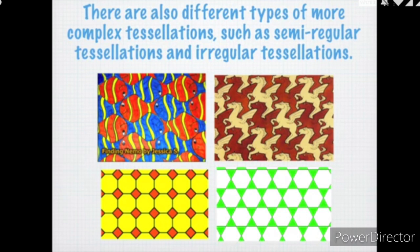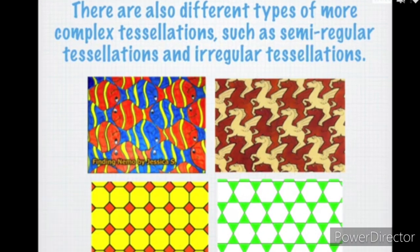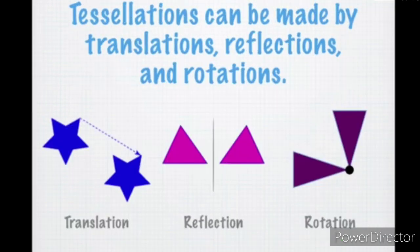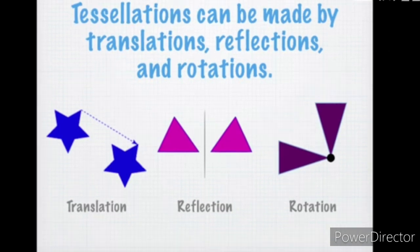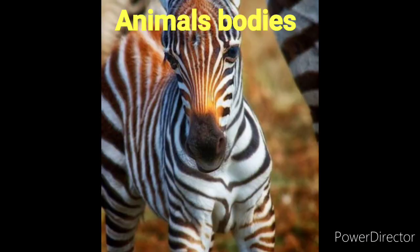Tessellations are in regular and irregular tessellations, figures and geometrical shapes. Tessellations are in translations, reflections, and rotations of the geometrical shapes. Let's talk about tessellations. The most important example is tessellations in animal bodies.